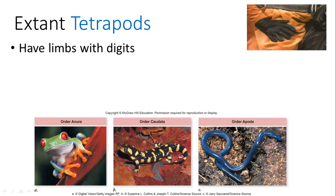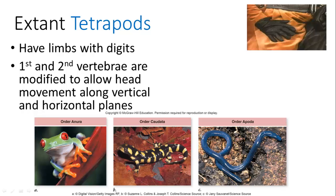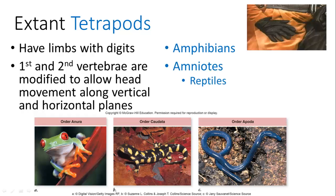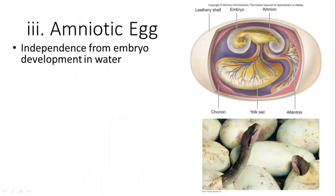Tetrapods have limbs with digits. The first and second vertebrae are modified to allow for head movement. Tetrapods include amphibians and amniotes, which include reptiles and mammals. The atlas and axis are these first two vertebrae — the atlas allows you to nod your head up and down, while the axis allows you to rotate your head side to side.